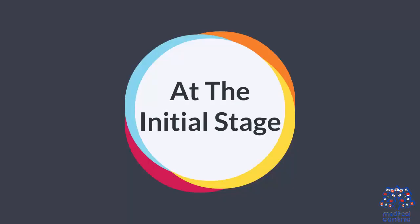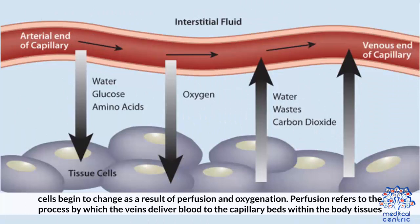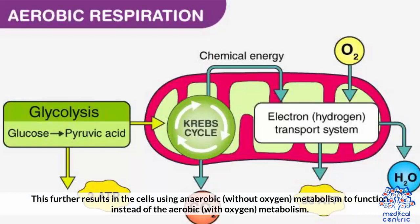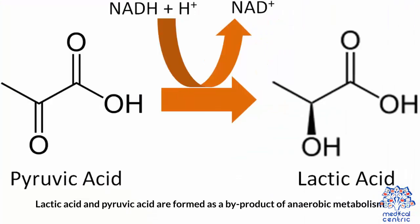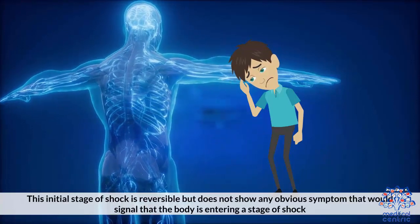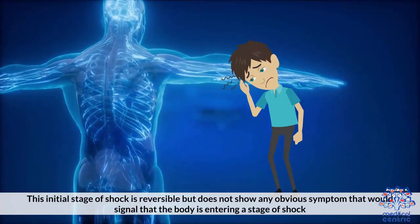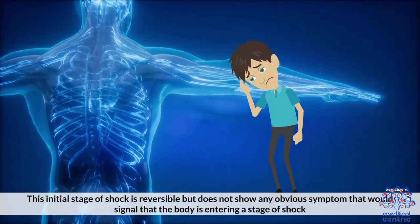At the initial stage, cells begin to change as a result of perfusion and oxygenation. Perfusion refers to the process by which the veins deliver blood to the capillary beds within the body tissues. This further results in the cells using anaerobic — without oxygen — metabolism to function instead of the aerobic, with oxygen, metabolism. Lactic acid and pyruvic acid are formed as a byproduct of anaerobic metabolism. This initial stage of shock is reversible but does not show any obvious symptom that would signal that the body is entering a stage of shock.